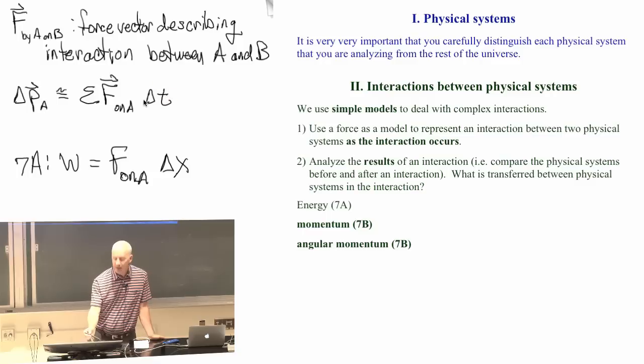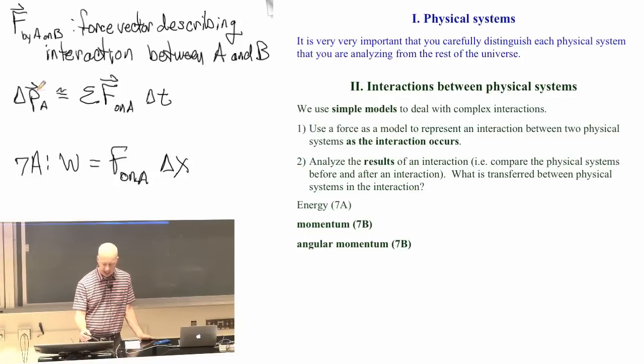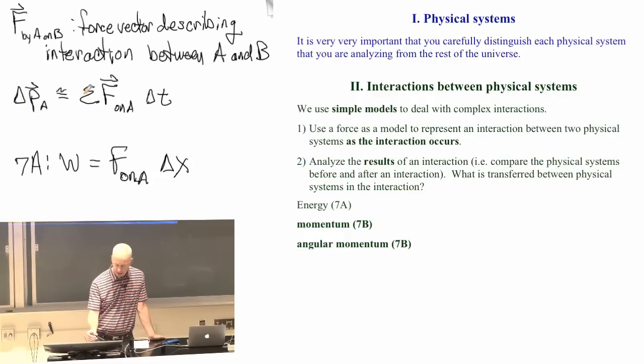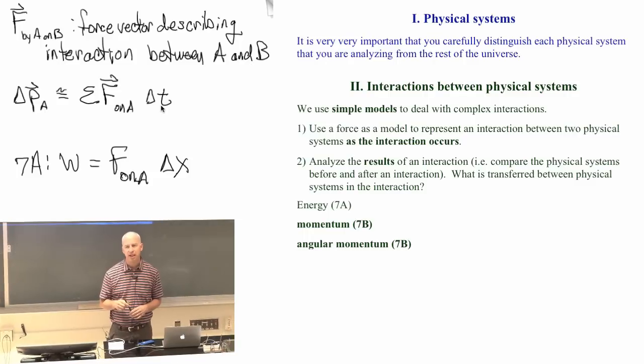If a force acts on something for some time, then it will transfer momentum. The total momentum change is the result of all of the forces that are acting for that amount of time. So this delta PA, the change in the total momentum of some object, depends on the sum of all the forces acting on that object and the time over which they act. Delta T is the time over which that interaction happens.